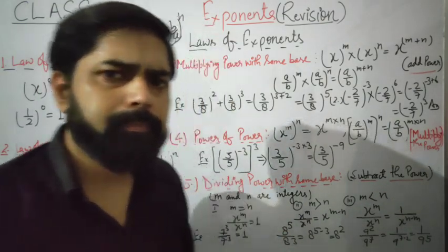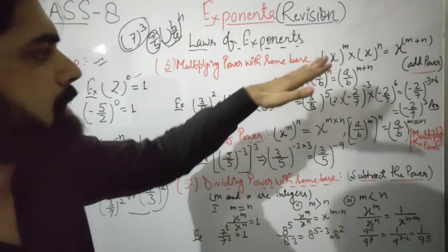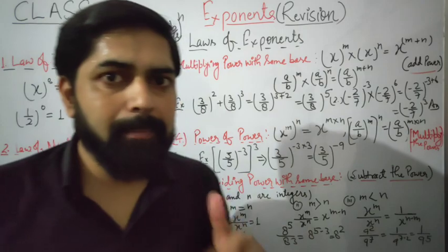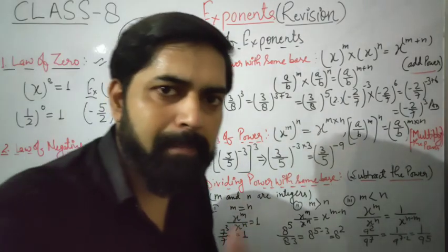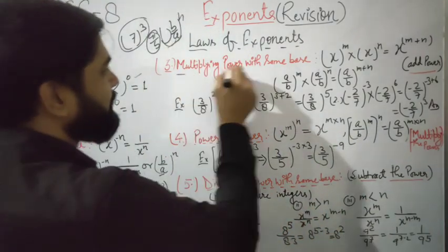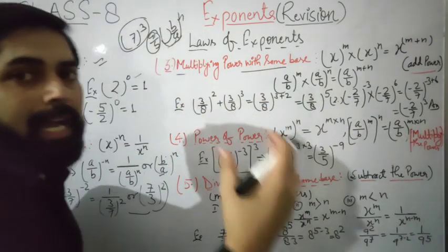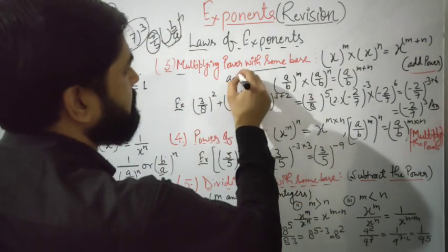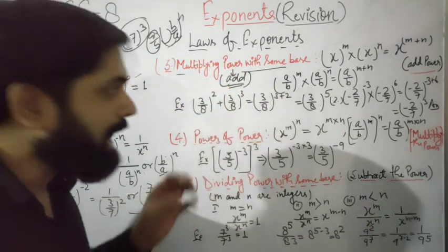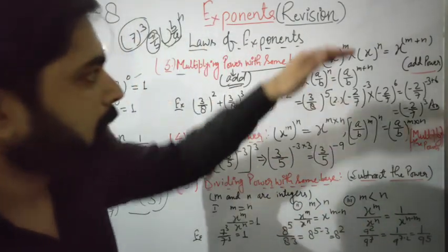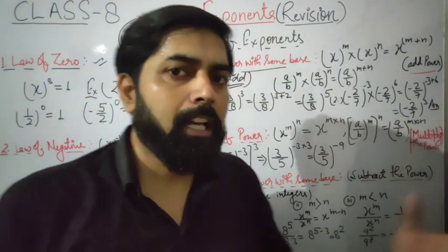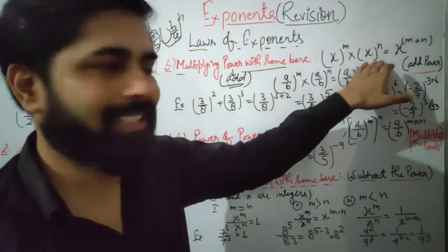The third law is multiplying powers with the same base. When numbers with the same base are being multiplied and their powers are different, in that condition you can add the powers. Power gets added when the base is the same and the numbers are being multiplied together.